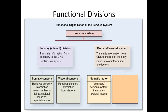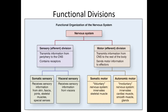Somatic motor only applies to voluntary effectors. Only the part of the nervous system going to skeletal muscle falls into somatic motor. The neurons going to glands, smooth muscle, and cardiac muscle are not included here. They would be included in the involuntary portion, which is not known as visceral motor, but is known as the autonomic motor. Please note — it is not 'automatic,' it is 'autonomic.' Please learn this word.